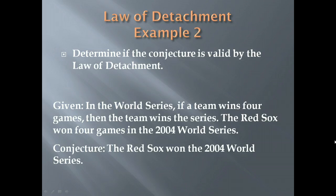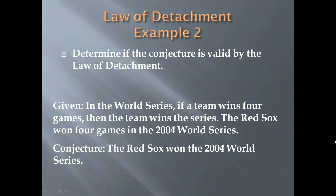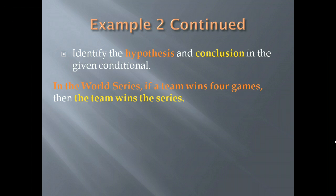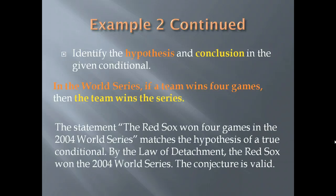Given: In the World Series, if a team wins four games, then the team wins the series. The Red Sox won four games in the 2004 World Series. Our conjecture is: the Red Sox won the 2004 World Series. The hypothesis is 'a team wins four games' and the conclusion is 'the team wins the series.' The statement 'the Red Sox won four games' matches the hypothesis of a true conditional. By the law of detachment, the Red Sox won the 2004 World Series — the conjecture is valid.